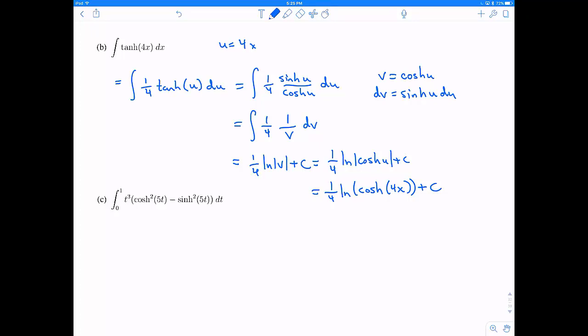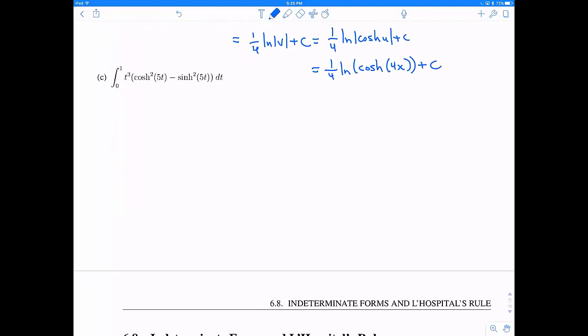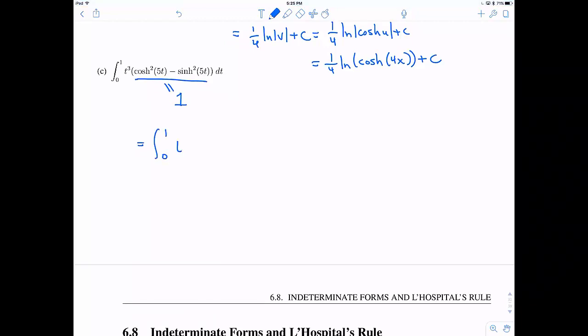Alright. The final problem that I have here, the main thing is that we need to recognize that we have hyperbolic cosine squared minus hyperbolic sine squared. So we should recall that this is actually the same thing as 1. So therefore, this problem simplifies down a lot if we recognize this.